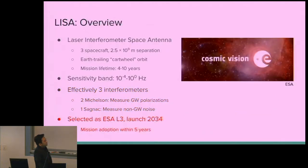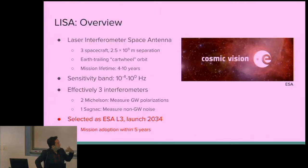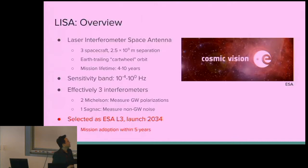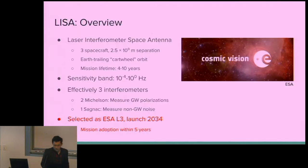Funding has been approved for LISA, which was selected as the third large-class mission in ESA's Cosmic Vision program, with a scheduled launch date of 2034. Even though that's 15 years away, our work has already begun. The priority is to come up with a prototype instrument and data processing framework within five years, when mission adoption will take place.